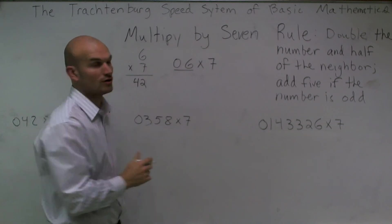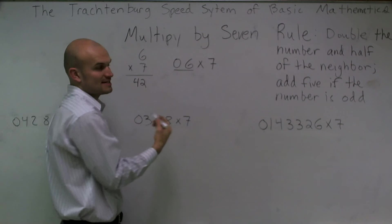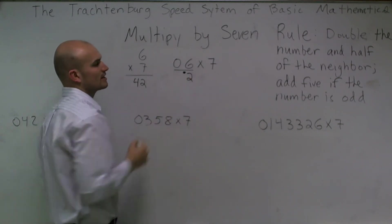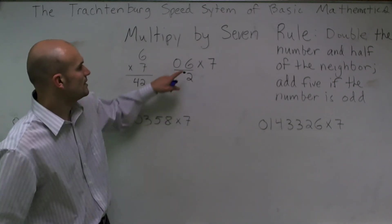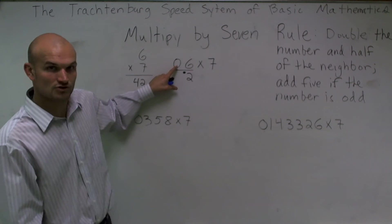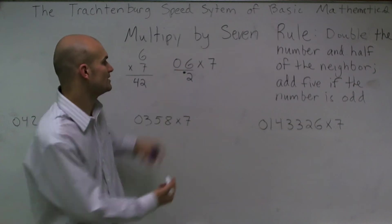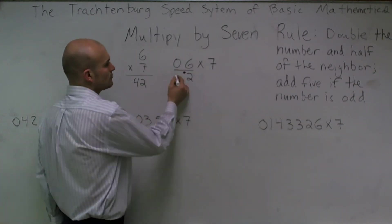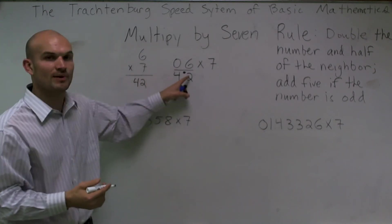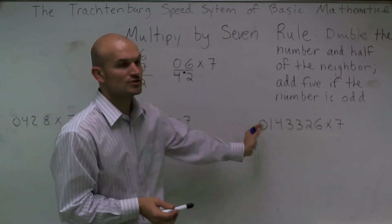So to follow this rule, I'm going to double 6, which gives me 12. I can't add half of a neighbor because there is no neighbor to the right, so I just say 12 — writing 2 with the carried 1 as a dot. Now I move over to 0, the next number. I say double 0, which gives me 0, add half of the neighbor which is 6 — half of 6 is 3 — plus the carry of 1, which gives me 4. So you can use the Trattenburg system on single digits, but it's better used on very long numbers.